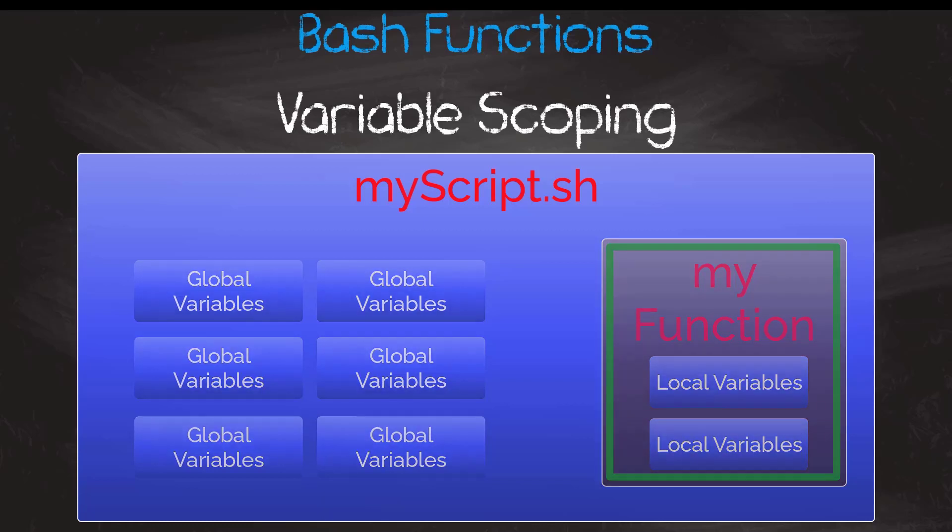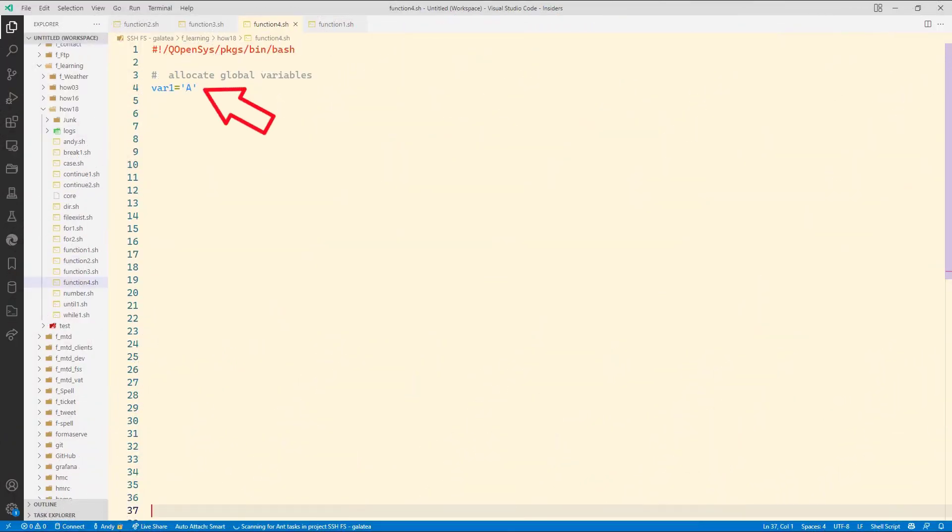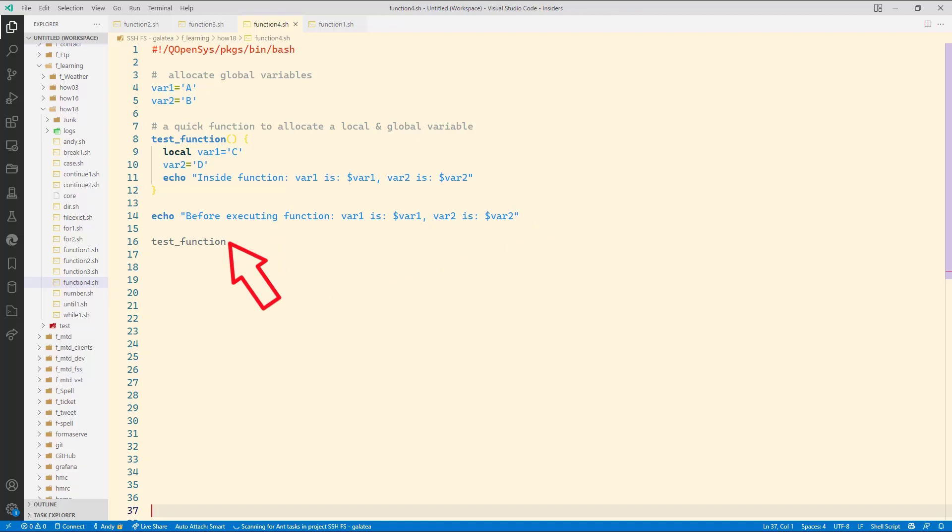Let me show you an example. Let me declare var1 with a value of a and var2 as a value of b. Next we will code a function called a test function. Then we declare the variable var1 as local with a value of c. And change var2 to d. Then an echo to show the value of those variables still within the function. Then when we leave the function, and then an echo to see the values it has in var1 and var2 variables. Next we execute the function. And again an echo to see what values we have in the var1 and var2 variables.